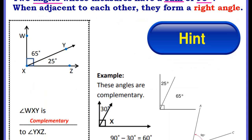Complementary angles. These are two angles whose measures have a sum of 90 degrees. When adjacent to each other they form a right angle. So this is an example of complementary angles. We have angle WXY and angle YWX. They're next to each other. They're adjacent and when you add up their angle measures it equals 90 degrees. 65 plus 25 is 90 degrees.